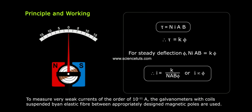To measure very low currents of the order of 10 power minus 11 ampere, the galvanometers with coils suspended by an elastic fiber between appropriately designed magnetic poles are used.